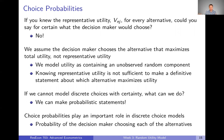So we're not going to be able to model discrete choices with certainty. But what we can do is make probabilistic statements about what alternative a decision maker will choose. These choice probabilities are going to play an important role in our discrete choice models. Choice probabilities are the probability of the decision maker choosing each of the alternatives. If we didn't actually observe the choice, we could say we think the probability of choosing one is 50%, the probability of choosing two is 30%, and so on.